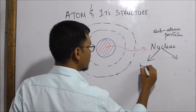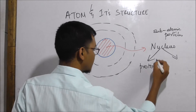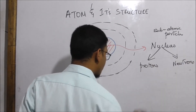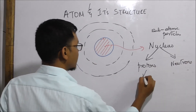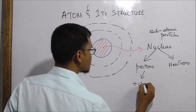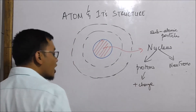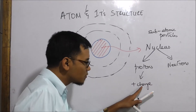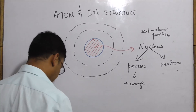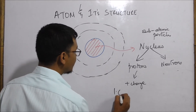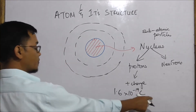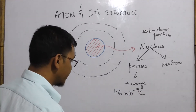We have protons and neutrons. The proton has a positive charge of 1.6 × 10⁻¹⁹ coulombs. This is the unit of electric charge.